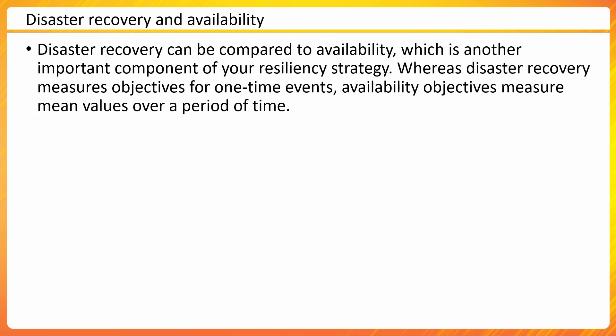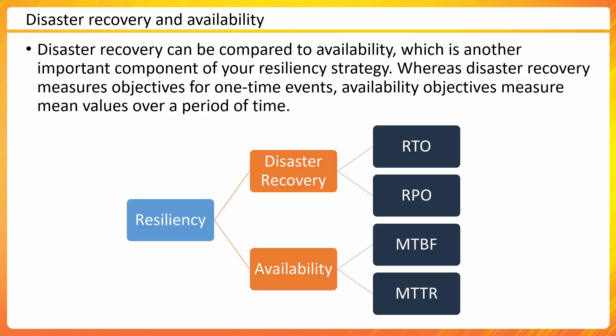Disaster recovery and availability are sometimes confused, but they are a little different. Disaster recovery's major objective is for a one-time event — if an event happens, that is what we call disaster recovery. Whereas availability measures mean value over a period of time. When we talk about resiliency, it is made up of both disaster recovery and availability. Disaster recovery is measured in RTO and RPO, whereas availability is measured in mean time between failure and mean time to recover.